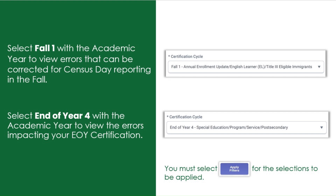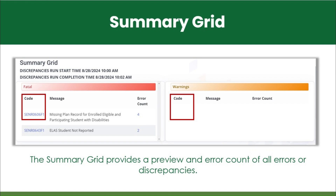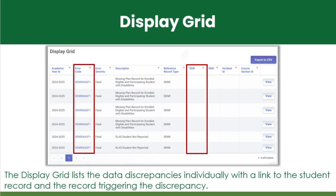You can view any reporting cycle, regardless of the certification window we are currently in. The Data Discrepancies report consists of three sections. Once you have applied the selected filters, the summary grid appears at the top of the page. This provides users with a list of fatal and warning error codes. The display grid at the bottom of the page identifies the student records that are triggering the fatal errors and warnings.